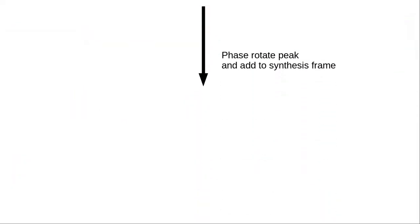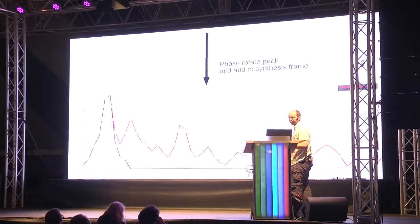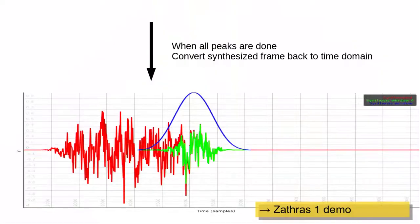Once we know the phase-correction, we apply it to the synthesized peak and then add this peak to the synthesized frame. Once you have a full synthesized frame, you convert it back to the time domain, fade in and fade out the volume again — and that's basically everything a time-stretcher does.